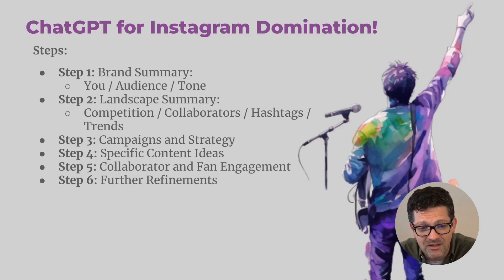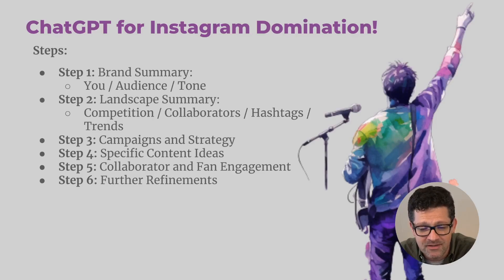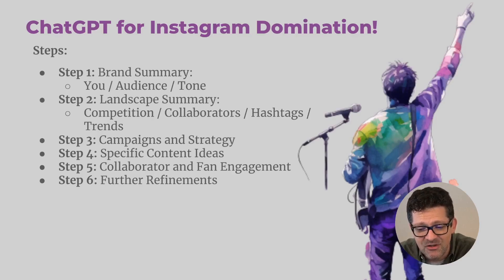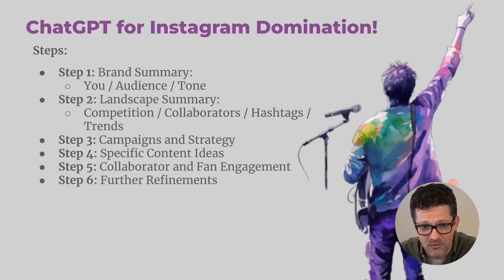The first step is understanding yourself, your audience, and your tone on a deeper level than you ever have before. Step two: understanding the competitive landscape — the competition, the collaborators, the hashtags, the trends. Step three: we're going to look into campaigns and strategies. Step four: very specific and unique content ideas. Step five: collaborator and fan engagement. And lastly, we're going to look at some further refinements.